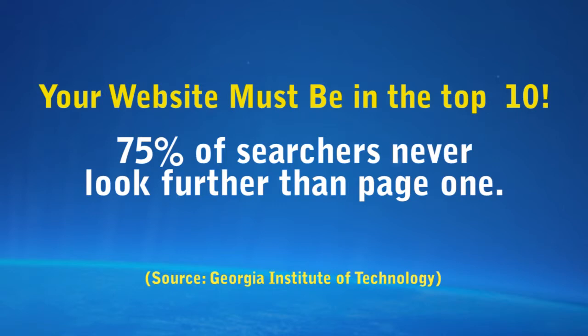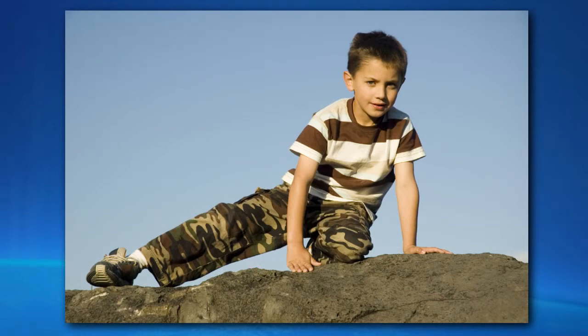The Georgia Institute of Technology recently did some research, and it indicated that 75% of people that use a search engine never go further than the first page. So if your website is on the second page, you automatically lose 75% of the people — they're never going to see you. The further back down the list you are, the worse it's going to be, and it really drops off fast. Typically search engines have 10 sites on that first page, so it's critically important for your page to be in that top 10.